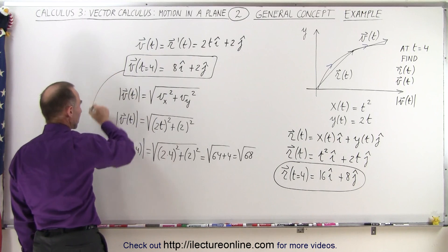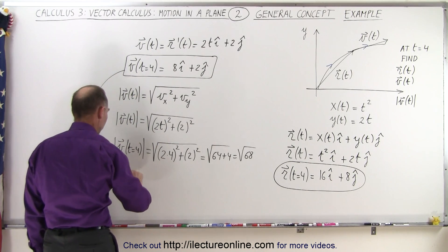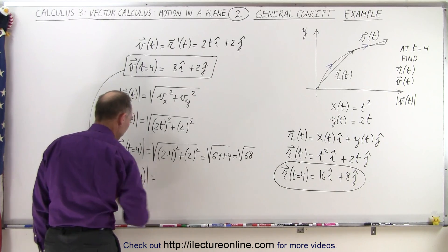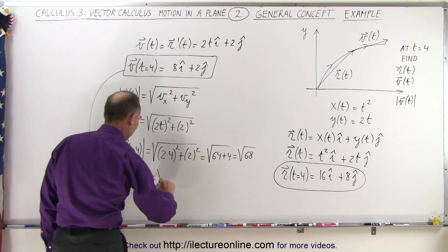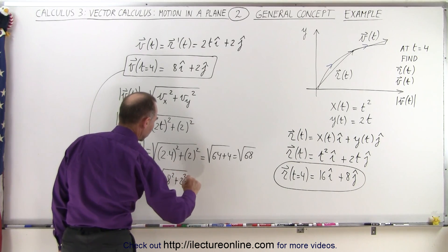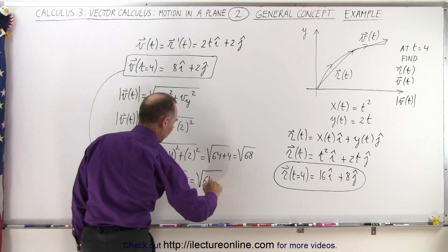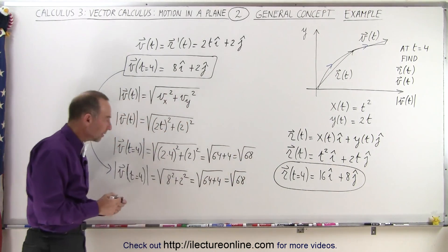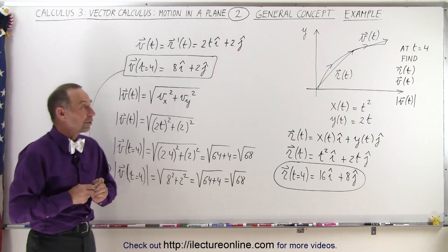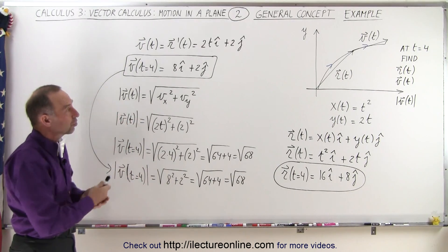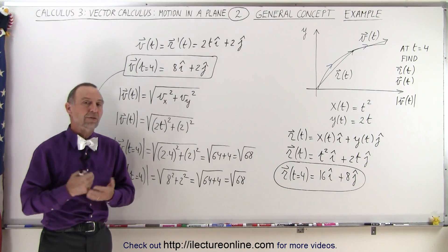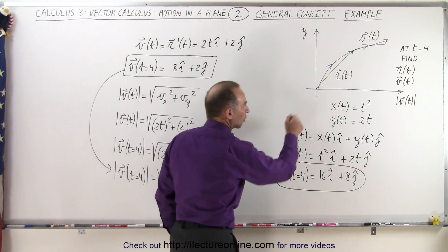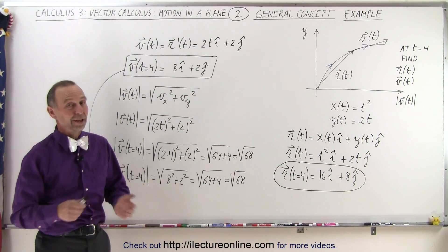Alternatively, using the velocity vector components directly, the magnitude when t equals 4 is the square root of 8 squared plus 2 squared, which is again the square root of 64 plus 4, or the square root of 68. Either way, you get the same answer. This is a simple example of how to use motion in two dimensions to find the position vector, the velocity vector, and the magnitude of the velocity based on two parametric equations for the x and y directions.